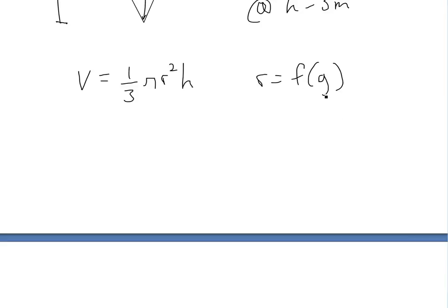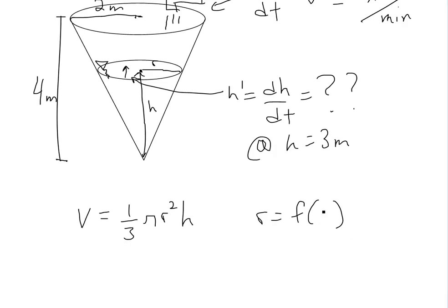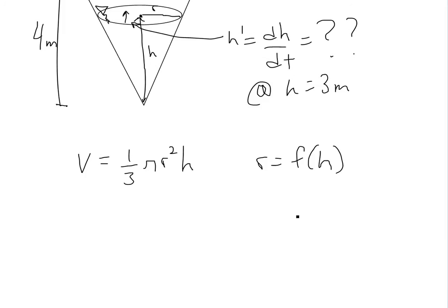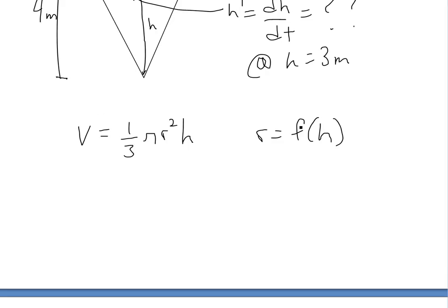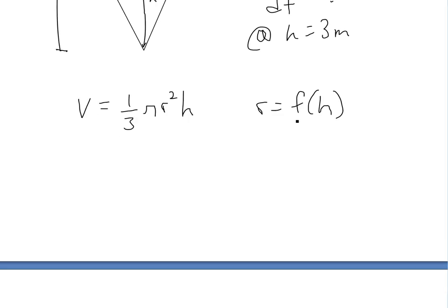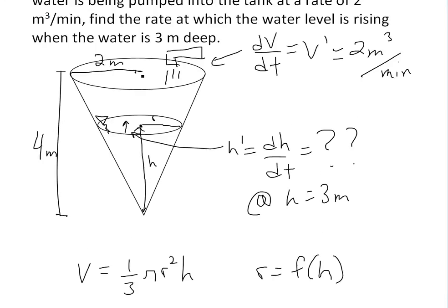So r is a function of h right here. I'll write r equals f of h. This just means function of h. So r is a function of h, so we have to relate these two somehow. And the way to do that is actually using similar triangles.